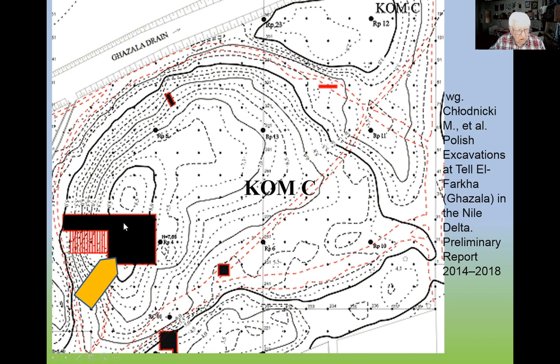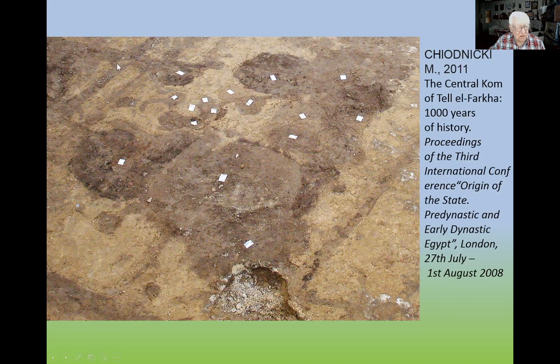At Kom W, a trench was made and in this trench were discovered the following structures present in stratigraphy. On top of the sands of Ghazira, these yellowish sediments, there are sands of Ghazira.